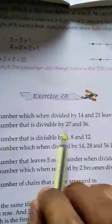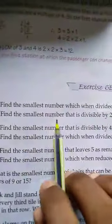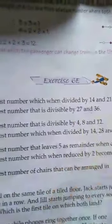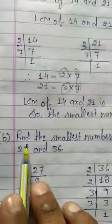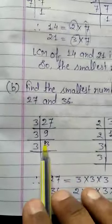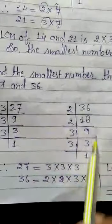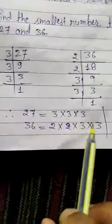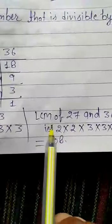Now students, Part B of Question 1: Find the smallest number that is divisible by 27 and 36. Same as Question 1A, we need to find the LCM of 27 and 36. You will write the question and then find out the factors of 27 and 36.